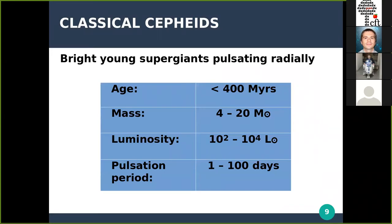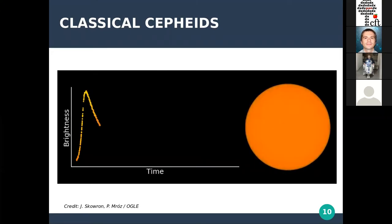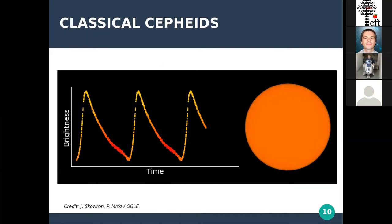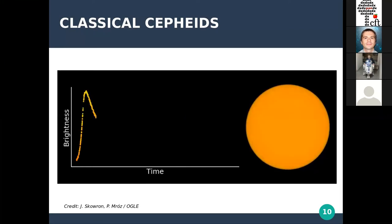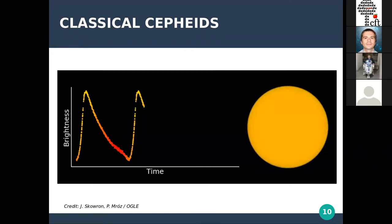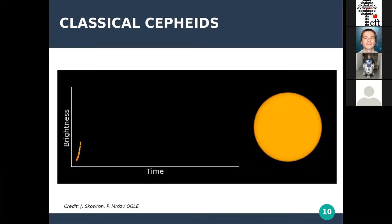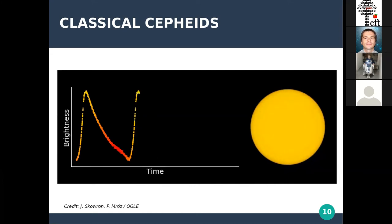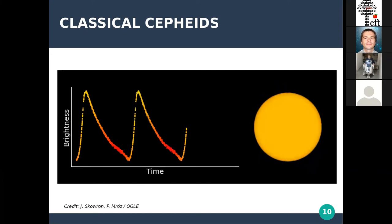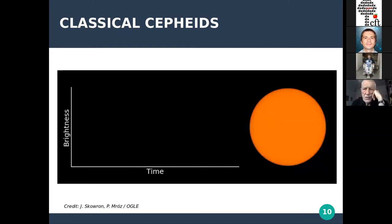Some physical properties of classical cepheids: they are young — less than 400 million years — very massive, up to 20 solar masses, and very luminous, from 100 to 10,000 solar luminosities. Their pulsation period is from about one to 100 days. A pulsation means that a star is regularly changing its size, brightness, and surface temperature. On the right you have a model of a pulsating classical cepheid, and on the left is the light curve — the change of the star's brightness with time. The light curve has a very characteristic triangular shape, making it easy to identify among millions of other variable stars.